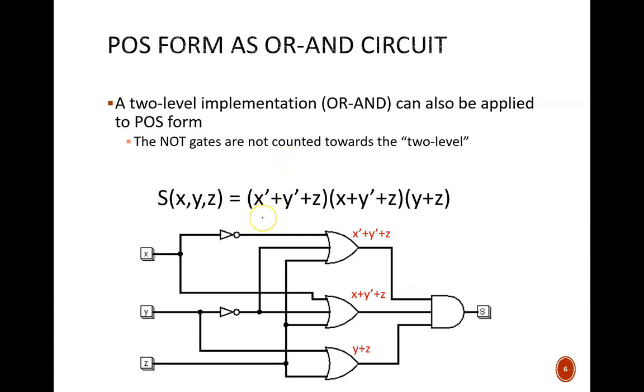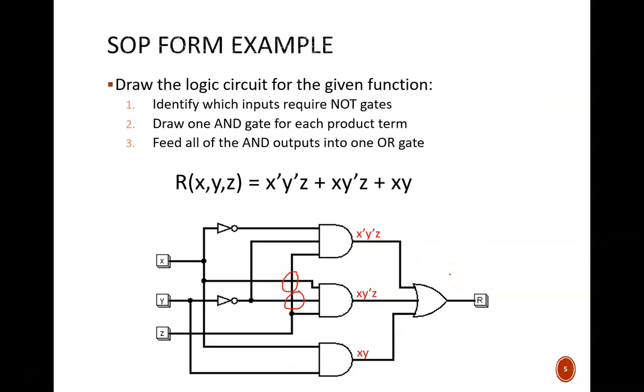How do OR-AND circuits work? First, you need to know the POS equation. Then, each sum term is converted into an OR gate. For example, this X' or Y' or Z is drawn here. Finally, the product is achieved with a single large AND gate at the end. Here's another instance where SOP and POS equations work in very similar but opposite ways. In this case, just the order of the AND and OR gates is flipped.